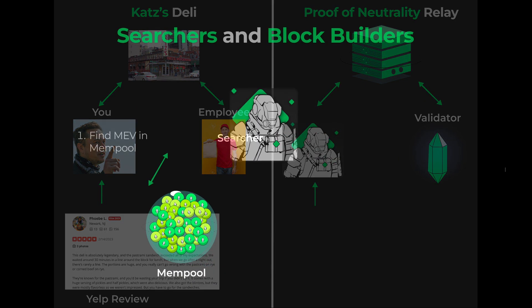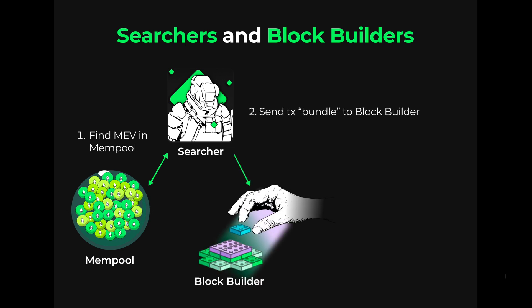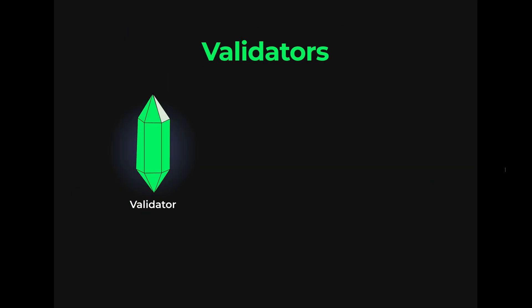Searchers are actors in MEV that search mempools to create a series of transactions that will be profitable if inserted into Ethereum. They send these transactions to block builders who create a complete block of transactions. The last transaction is a tip for the validator to incentivize a validator's submission of that block into Ethereum. Validators are digital entities staked on Ethereum that validate transactions and earn staking rewards.